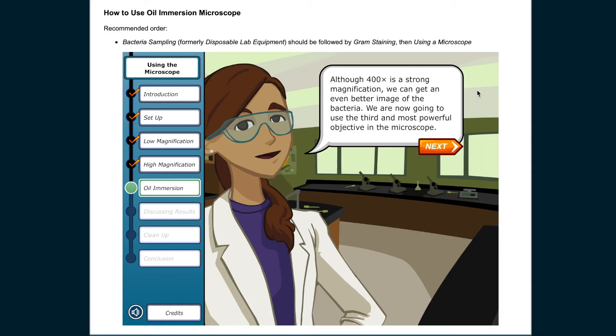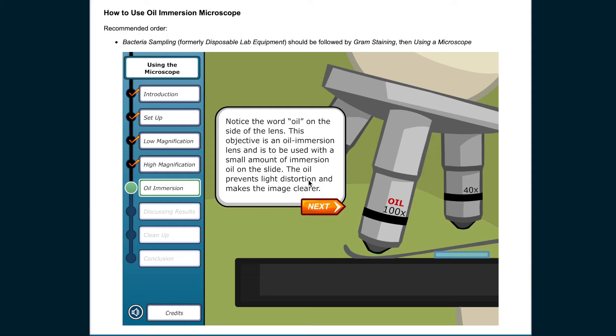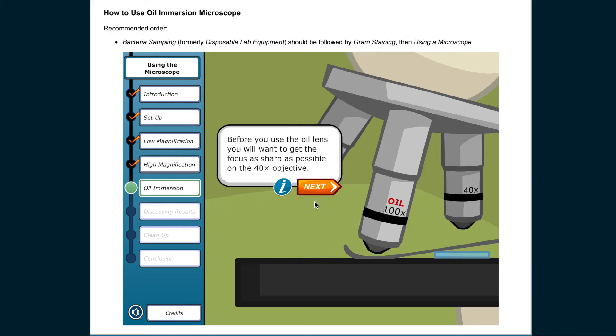Although 400 times is a strong magnification, we can get an even better image of the bacteria. We are now going to use the third and most powerful objective in the microscope. This objective has 100 times magnification, which will give us a total of 1,000 times magnification. Notice the word oil on the side of the lens. This objective is an oil immersion lens and is to be used with a small amount of immersion oil on the slide. The oil prevents light distortion and makes the image clearer. Before you use the oil lens, get the focus as sharp as possible on the 40 times objective.